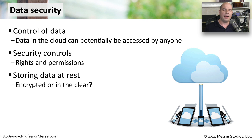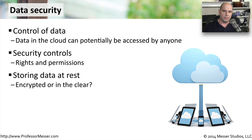We should also think about how we're storing this data. We commonly refer to this as data at rest — it is on a storage device, in this case one that's in the cloud. We have to think about encryption of this information to help keep it private. If we store this information in an encrypted form, then if somebody did gain access to that data, they wouldn't be able to read it. But there's computing overhead and additional administrative concerns whenever you start encrypting all of the data that you're storing.